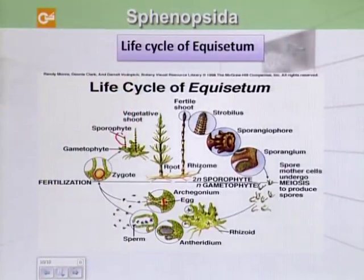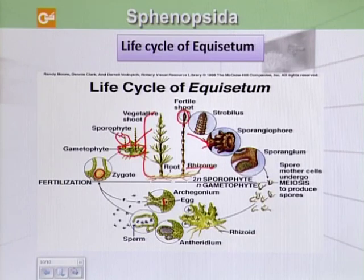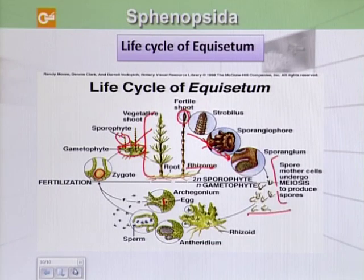This is the sporophyte plant body bearing the sporophyte, and then the gametophyte, as we discussed, is thaloid. This is the vegetative shoot which bears roots and rhizome too. The fertile shoot bears the strobilus, and the strobilus in turn has sporangiophores and sporangia.